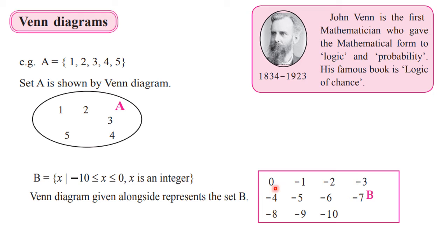One more example is given. The set is given in set builder form: V is a set of all X such that minus 10 is greater than or equal to X and X is greater than or equal to 0, and X is an integer. So we have to write down all the integers from minus 10 to 0. You can write them in sequence inside the figure. Such representation is called a Venn Diagram.